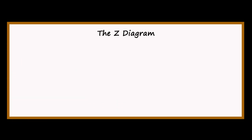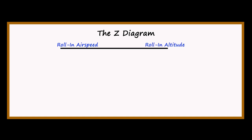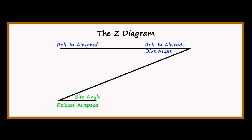Before we go out to the range, let's take a quick look at a tool the U.S. Navy uses to help pilots prepare for an attack run. This is called a Z-diagram and it contains all the numbers you need to set up your attack properly. Across the top of the Z, we have roll-in airspeed and altitude. Coming down, we have the dive angle. At the bottom, we have sight angle, release airspeed, aim-off distance, and release altitude.